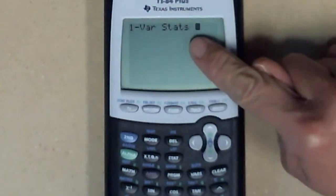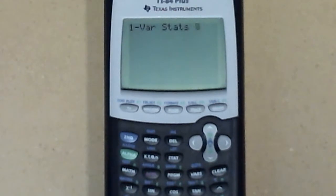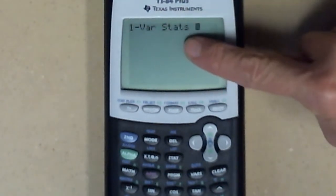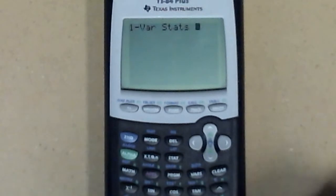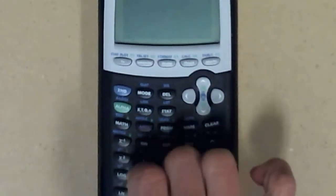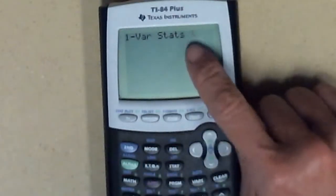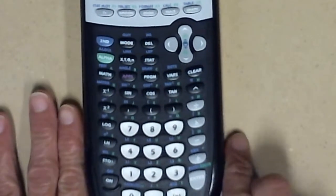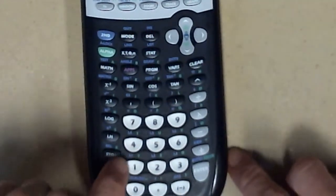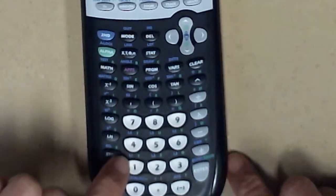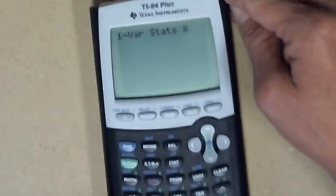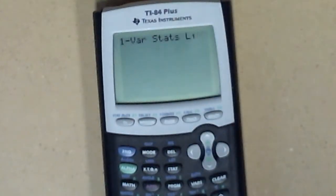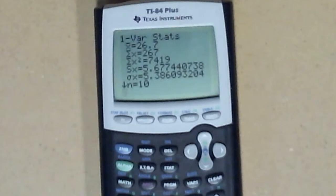One-variable statistics pops up. Now if your information is not in L1, or if you put it someplace else or named your list something else, right after you have this one-variable stats you need to type in using your alpha keys down here what the name of that is. Just to be on the safe side, I'm going to go ahead and type in my list name. It was L1. Right here in blue above my one key it says L1, so that corresponds right to that list in my stats menu. So I'm going to type in second L1 and let's see the miracle that happens.